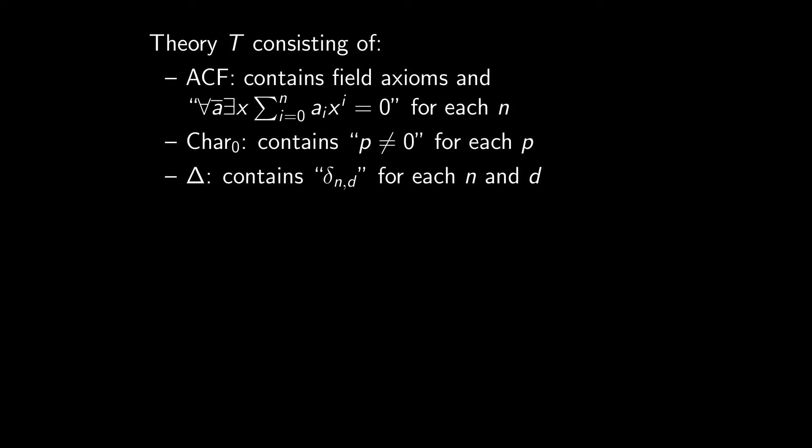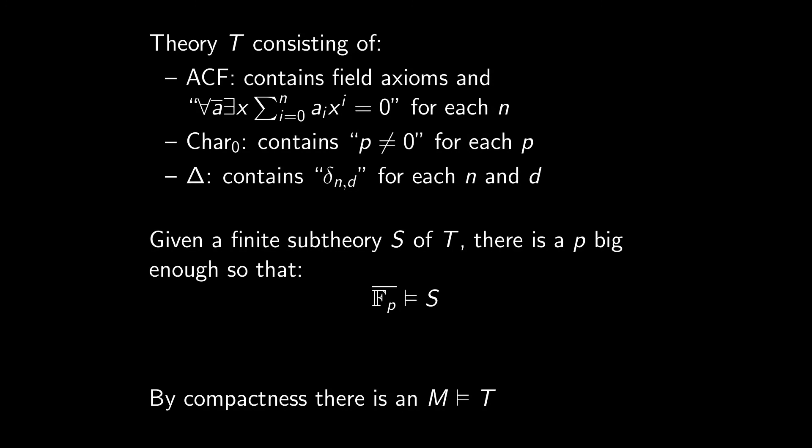We want to use compactness. We take a finite subtheory s of T, and we find a model for it. Since it only contains finitely many formulas, it only says p is not 0 for finitely many p. So I can find a prime not in this list, and F_p bar will be a model of s. It is algebraically closed, so it checks any subtheory of ACF. It checks delta as proven before, so it also checks any subtheory of delta. And since I chose p, which doesn't appear in the finite list of formulas presenting this subtheory, it also checks the subtheory of car 0. Therefore, for any finite subtheory s of T, I can find a model, which means T is finitely consistent, which means it is consistent by compactness, and there is a model of T.